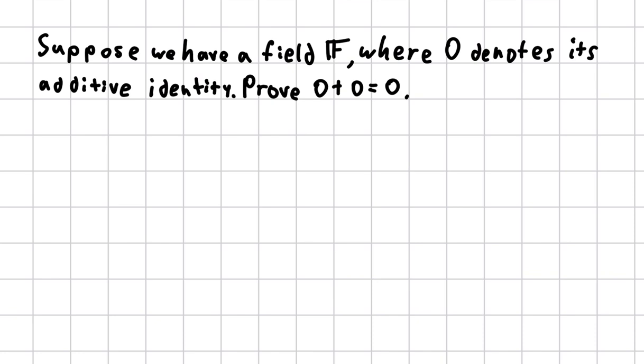So here we have our statement. Suppose we have a field F, where 0 denotes its additive identity. Prove 0 plus 0 equals 0.